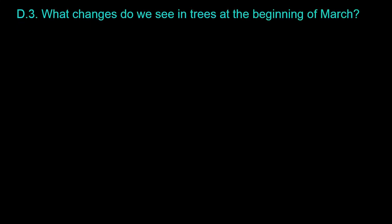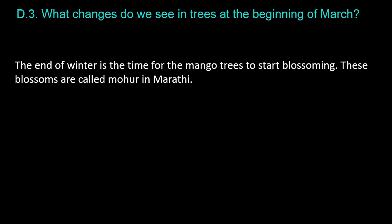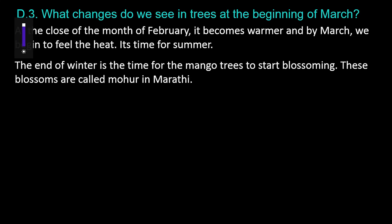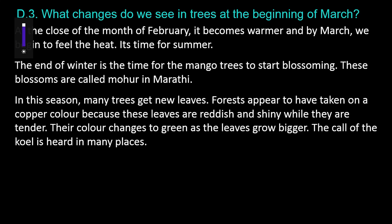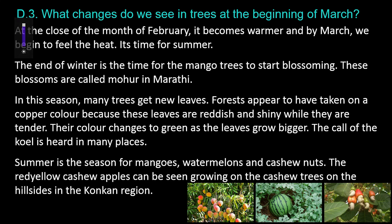Question D.3: What changes do we see in trees at the beginning of March? At the close of February, it becomes warmer, and by March, we begin to feel the heat — it's time for summer. The end of winter is the time for mango trees to start blossoming; these blossoms are called 'Mohir' in Marathi. Many trees get new leaves. Forests appear to have taken on a copper color because these leaves are reddish and shiny while tender, and their color changes to green as the leaves grow bigger. The call of the koel is heard in many places. Summer is the season for mangoes, watermelons, and cashew nuts. The red-yellow cashew apples can be seen growing on the cashew trees on the hillsides in the Konkan region.